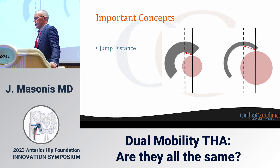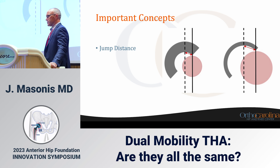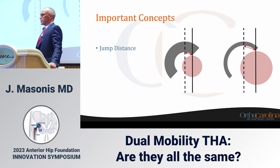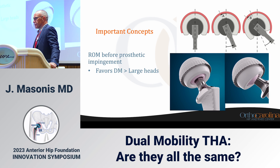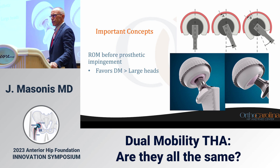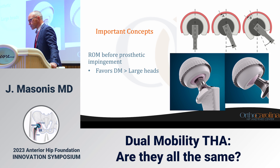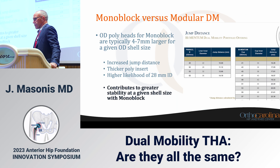Jump distance talks about head diameter versus importantly trunnion diameter — that's something we'll discuss with regards to resurfacing as well. The Charlie boer is a cylindrical elevation of the liner above the hemisphere of the head; not all constructs share this design feature. Range of motion before prosthetic impingement also favors dual mobility articulations over large femoral heads, and this can enable a soft-tissue-deficient hip to remain stable rather than having recurrent instability episodes.